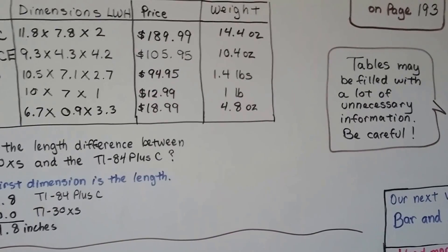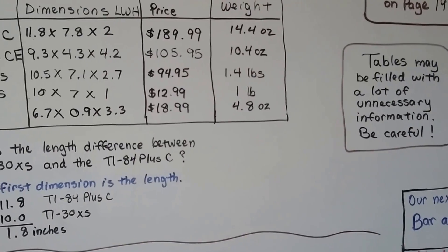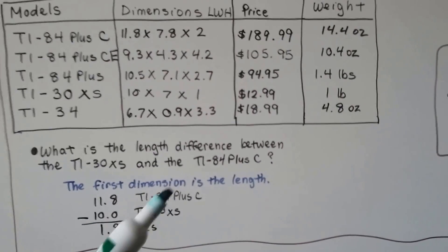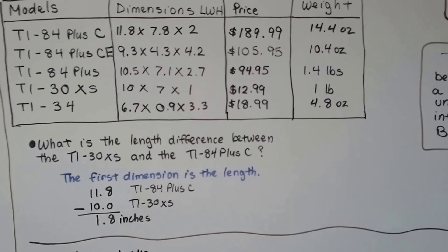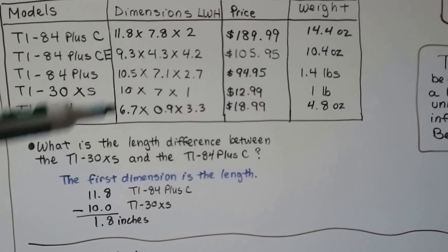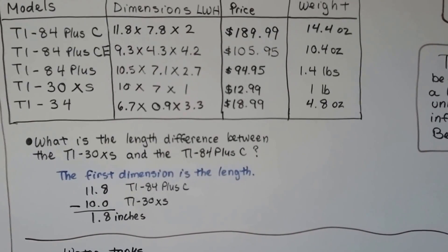Tables may be filled with a lot of unnecessary information. So be careful. Out of all of this information, we didn't need the prices. We didn't need the weights. We didn't need these other dimensions. We just needed that 11.8 and that 10. That was all.